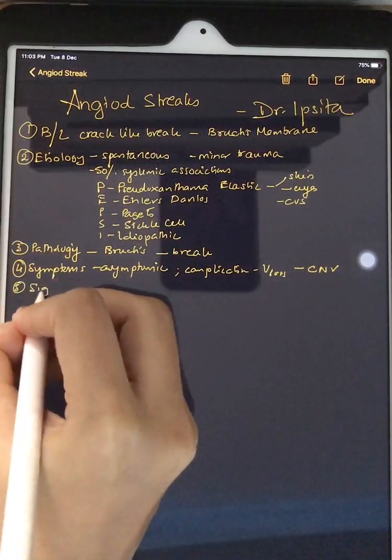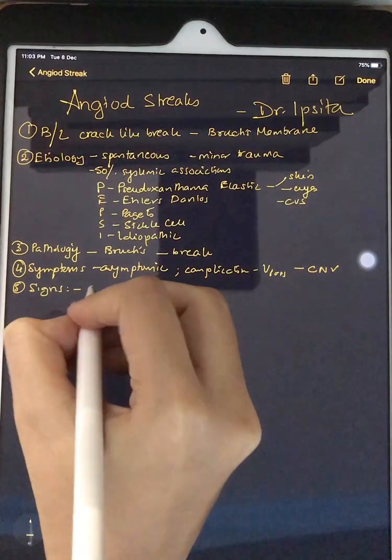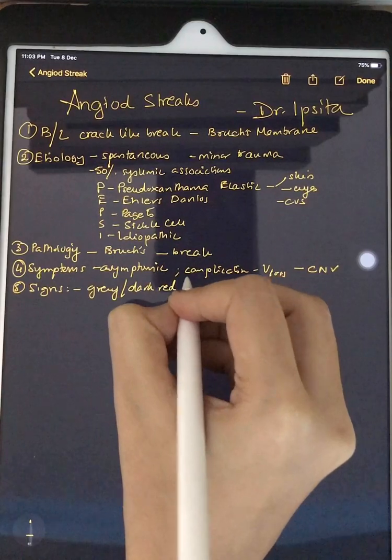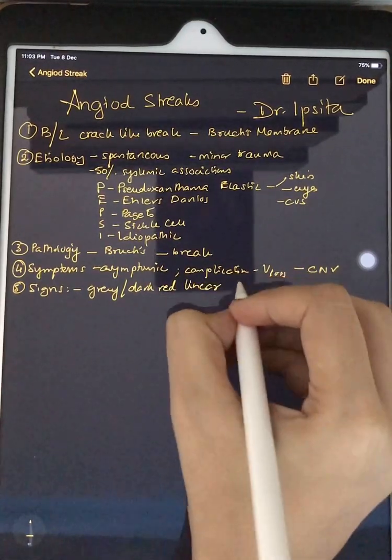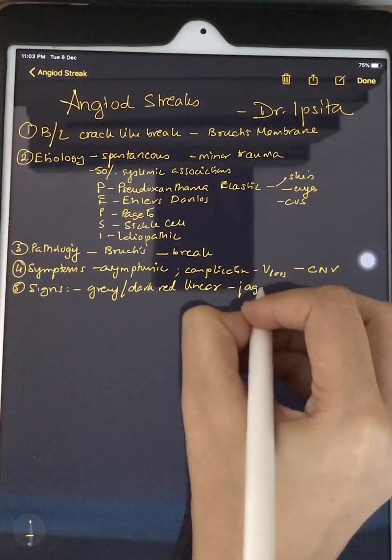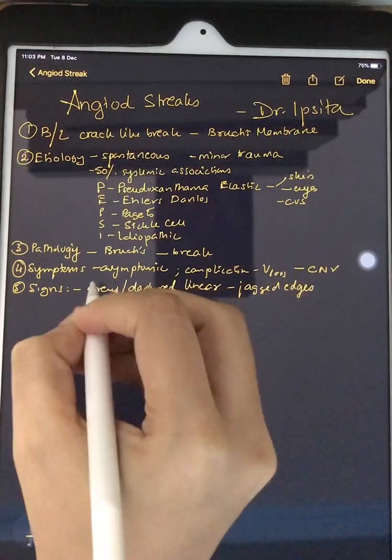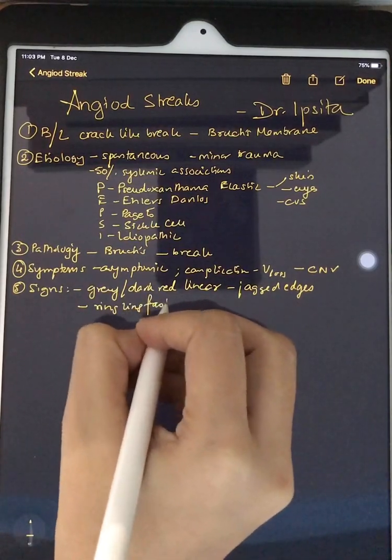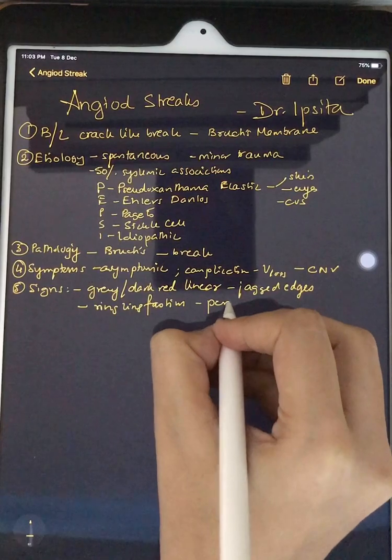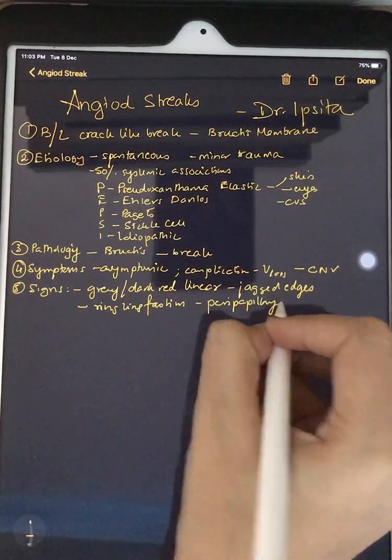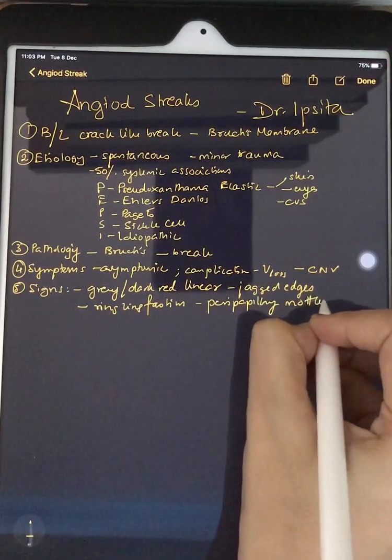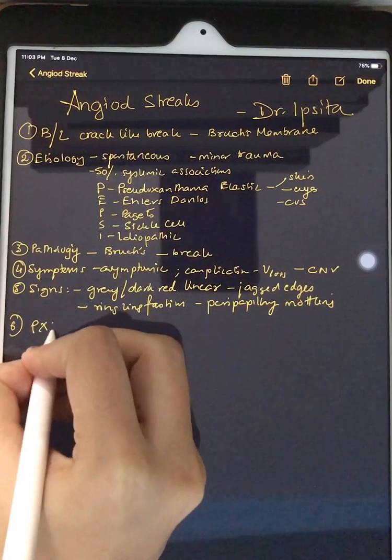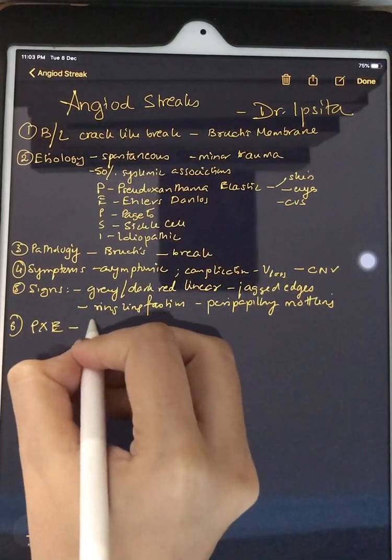So what are the signs of angioid streaks? They are gray or dark red linear lesions. They have jagged edges and they intercommunicate in a ring-like fashion from an area of peripapillary mottling. In case of Pseudoxanthoma elasticum, they have a peau d'orange appearance.